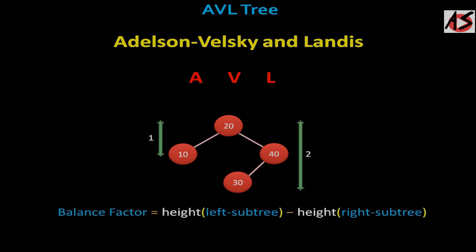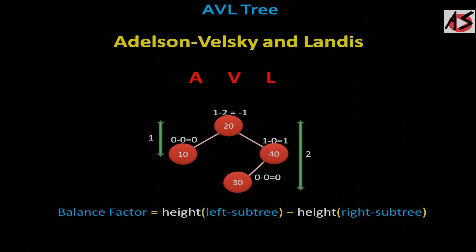So you can write the equation. Balance factor is equal to height of left subtree minus height of right subtree. AVL tree is a self-balancing binary search tree in which each node maintains extra information called a balance factor whose value is either minus 1, 0 or plus 1.